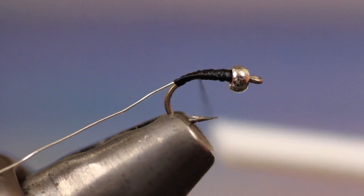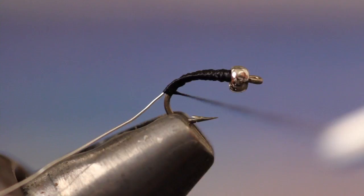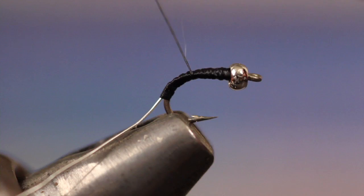I know it seems like a lot of wrapping, but using this procedure really helps to produce a nicely tapered body. Once you've made wraps deep into the bend of the hook, wrap your tying thread all the way back to the bead.